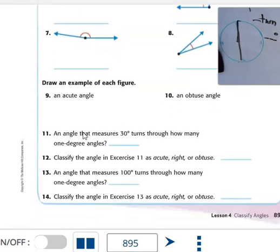Number eleven: An angle that measures 30 degrees turns through how many one-degree angles? You just need a number answer there. How many one-degree angles make up a 30-degree turn? Then classify the angle in exercise eleven as acute, right, or obtuse. You might want to compare that to a 90-degree right angle and see if it is a right angle, if it's less than right, or greater than right.